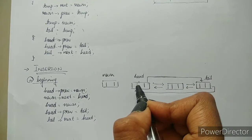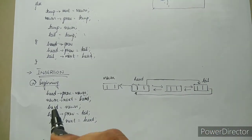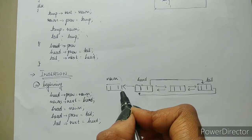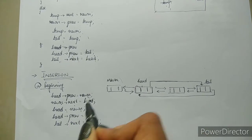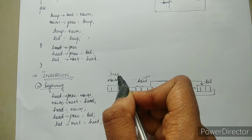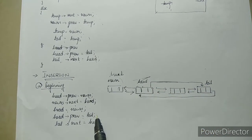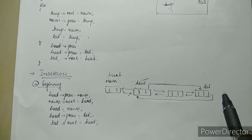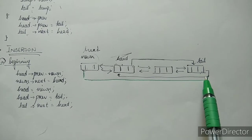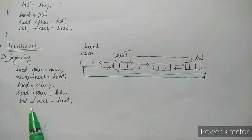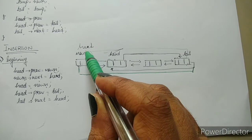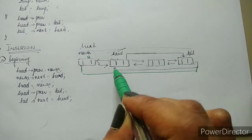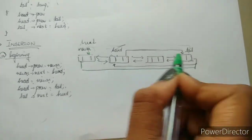First, head's previous is new node — we are forming a link here. Then new node's next is head. Now head is new node — this new node is head. Now head's previous is tail — this field is going to point to tail. The old black color link is removed and the green link is formed. Tail's next is head — tail points to head. So these two black links are removed, the green links are formed, and hence you insert a node at the beginning making it head.